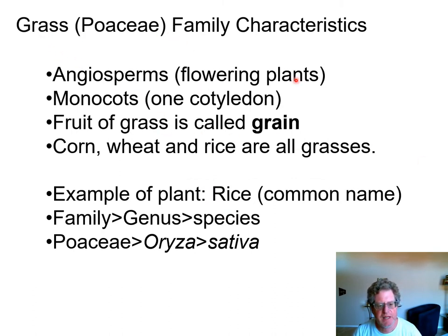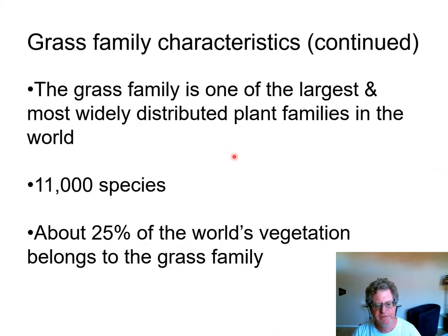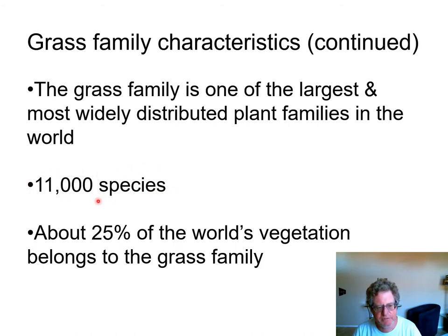In terms of the grass family, they're flowering plants. They're monocots, which means they have one seed leaf or cotyledon. The fruit of the grass is called grains. Corn, wheat, and rice are all grasses. If you look at rice, it's in the Poaceae family. Its genus is Oryza and its species is sativa — the common rice. The grass family is a really important family; it's very widely distributed. There are 11,000 species — different kinds of plants. About a quarter of all the world's vegetation belongs to the grass family, so no matter where you are on Earth, you're probably close to a grass plant.